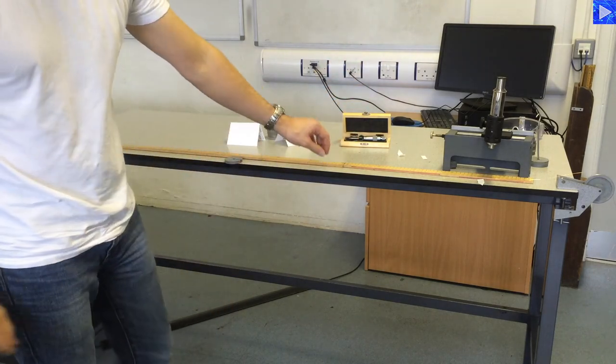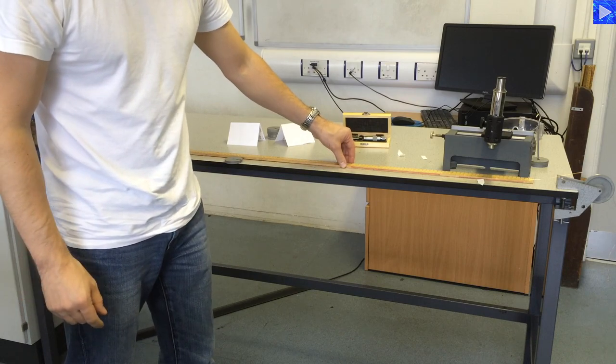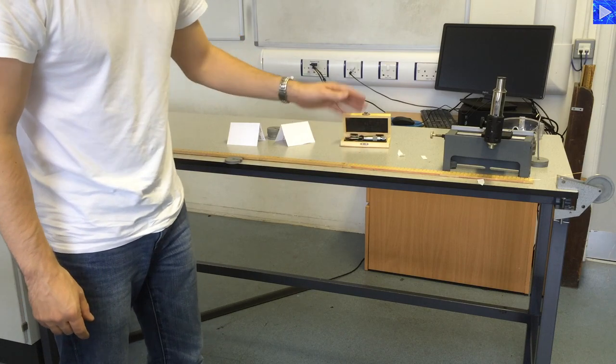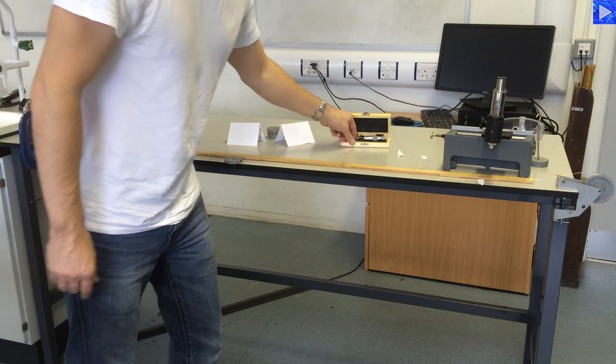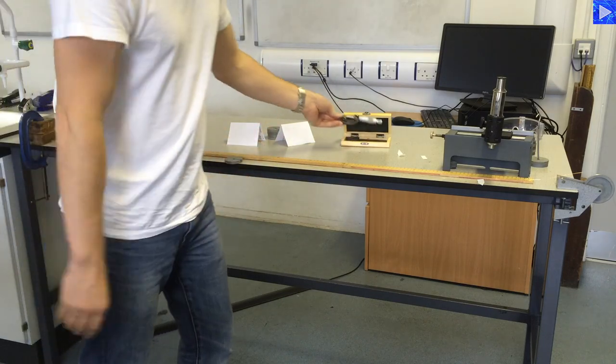I've got a metre rule plus a half metre rule so that I can measure the original length of the wire. The micrometer for measuring the diameter of the wire.